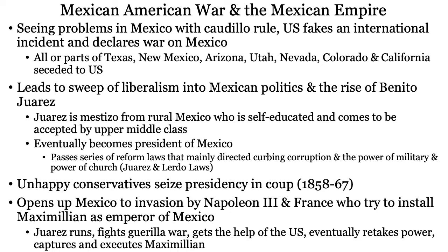Juarez fights and runs a guerrilla war, and things aren't going well for a while. In the early 1860s when this is happening, the United States is wrapped up in its own Civil War. Americans have never liked having monarchies near them, so once the US Civil War ends and Napoleon III is making trouble in the US's backyard — Mexico has become an empire — Juarez is finally able to get some help from the United States. He retakes power, captures, and shoots Maximilian, takes back control of Mexico, and becomes president again into the 1870s.